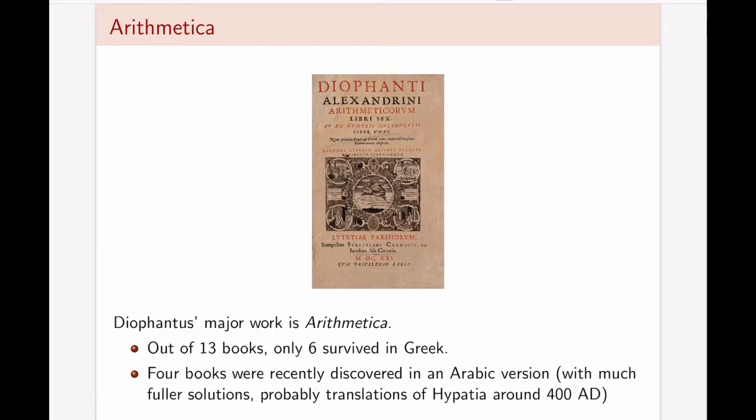Arithmetica is Diophantus's biggest work, his major work. It consists of 13 books, and only six of them survived in the original Greek language. Four of them have been somewhat recently discovered in the Arabic version, and they were actually probably translations of Hypatia from around 400 AD, so about 150 years after Diophantus.